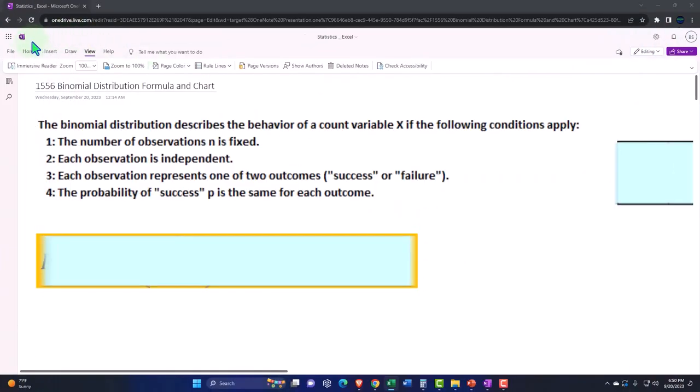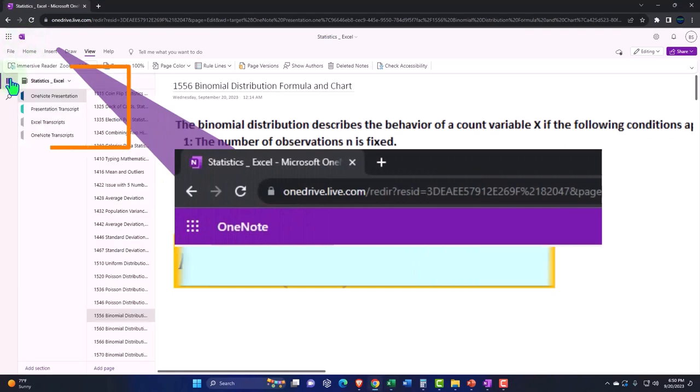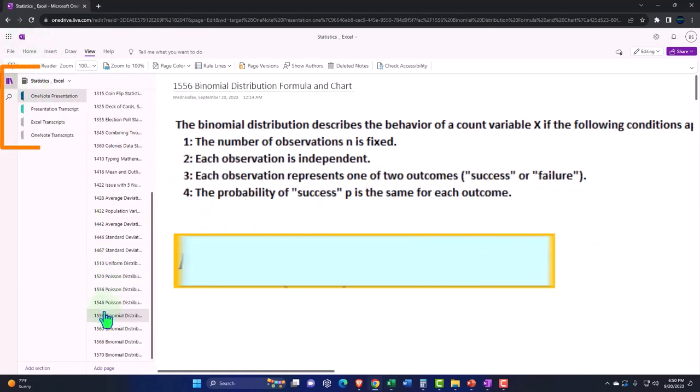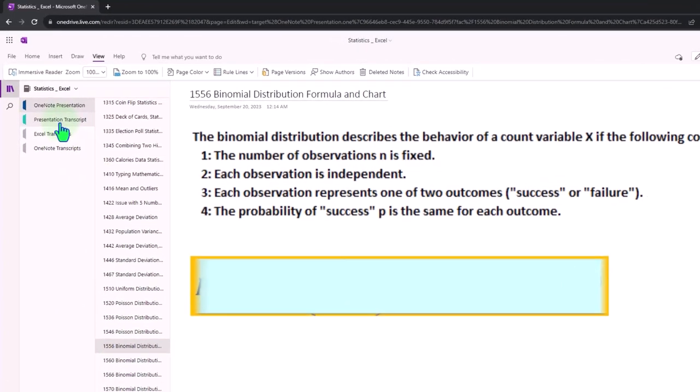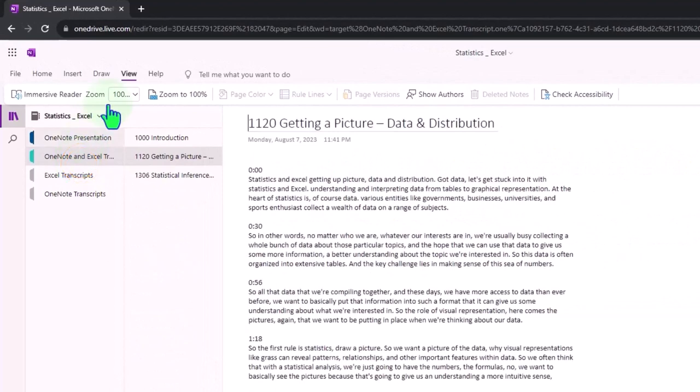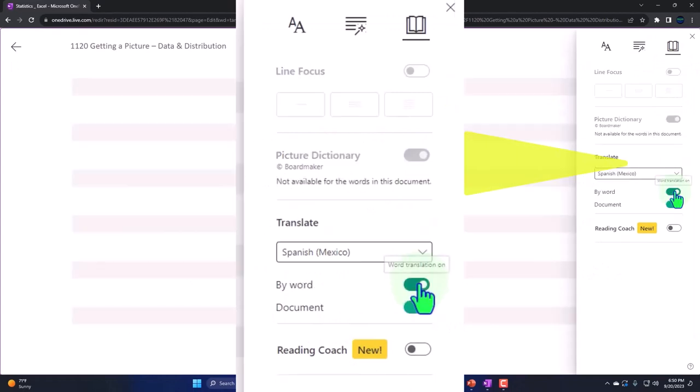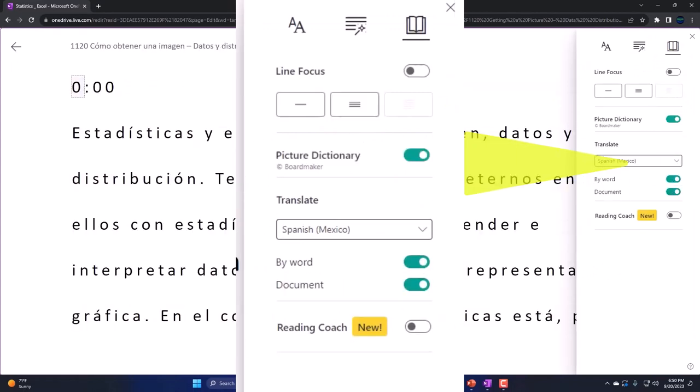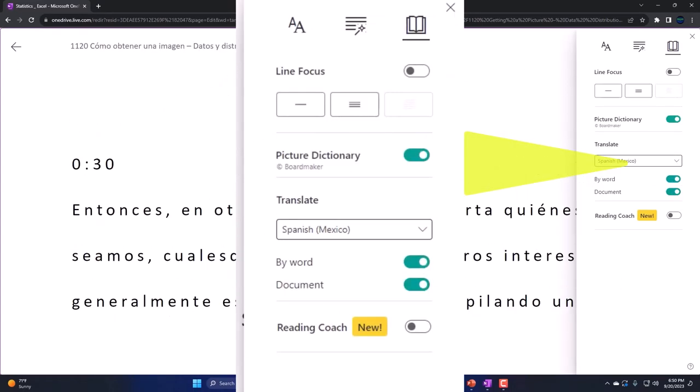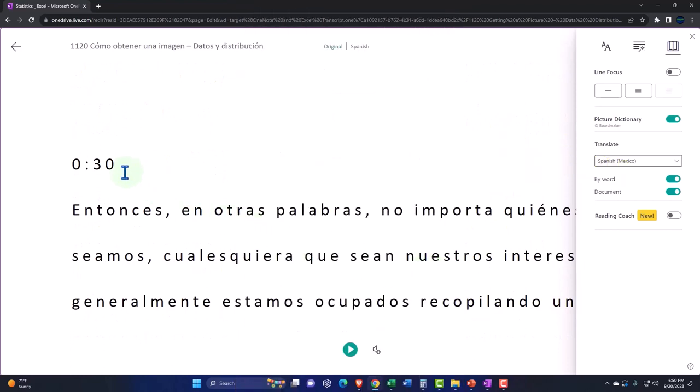Let's get stuck into it with statistics and Excel. You're not required to, but if you have access to OneNote, we're on the icon on the left-hand side, OneNote presentation 1556, binomial distribution, formula, and chart tab. We're also uploading transcripts to OneNote so that you can go to the View tab, Immersive Reader Tool, change the language if you so choose, be able to either read or listen to the transcript in multiple languages using the timestamps to tie in to the video presentation.